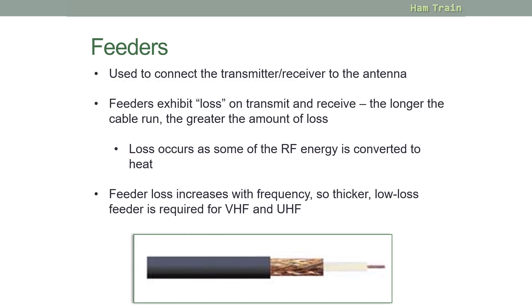Feeder is used to connect the transmitter receiver to the antenna. Feeder exhibits a loss on transmit and receive. The longer the run of cable that you have between your radio and the antenna, the greater the amount of signal loss through the cable. Loss occurs as some of the radio energy is converted into heat. The feeder loss increases with frequency. So for higher frequencies used at VHF and UHF, you'll need thicker, low-loss feeder to make sure more of your signal gets to the antenna.